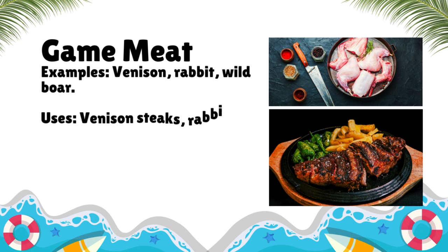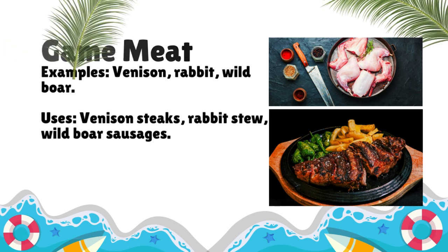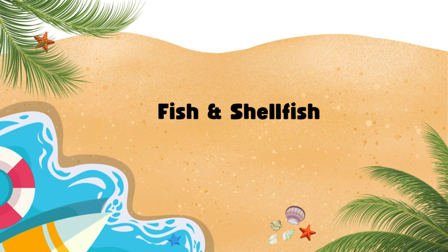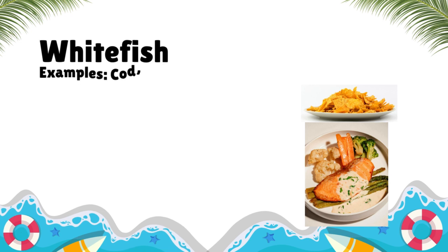Game meat — Examples: Venison, rabbit, wild boar. Uses: Venison steaks, rabbit stew, wild boar sausages.